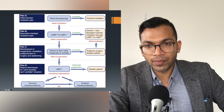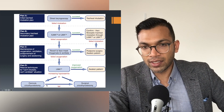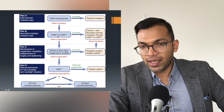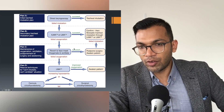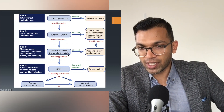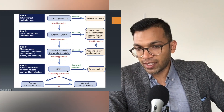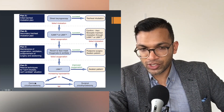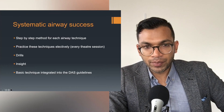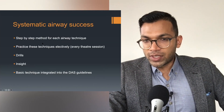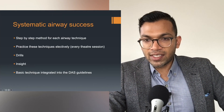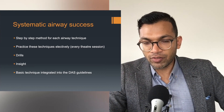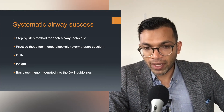This is the DAS guidelines, which essentially says: optimise laryngoscopy, optimise the LMA, revert to face mask oxygenation and optimise that, then an LMA again, and if all of those fail you're looking at a surgical airway. Let's get to it practically with a step-by-step method. Practice these techniques electively every theater session when you're training - do these as drills so you can execute them when it really matters.